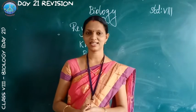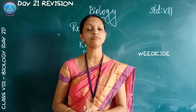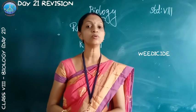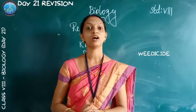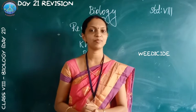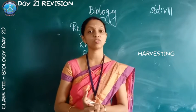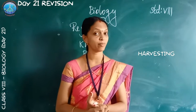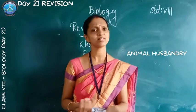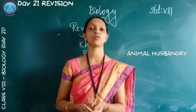Next we study weedicides. What is weeding? The removal of weeds is called weeding. Weedicides are chemicals used to destroy or kill the weeds. Weeds are controlled by using certain chemicals called weedicides, for example 2,4-D. Then we study harvesting. The cutting of crops after maturity is called harvesting. Nowadays it is done by machines such as tractors. Then we study animal husbandry. Food is also obtained from animals, and the rearing of such animals is called animal husbandry.